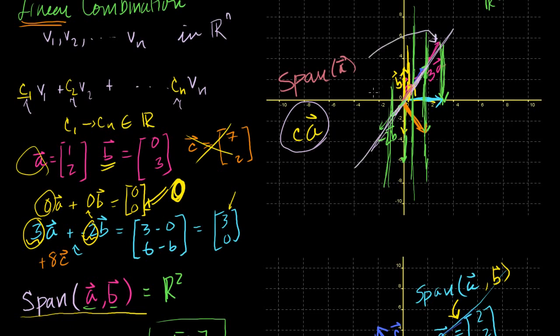You have to have two vectors, and they can't be collinear, in order to span all of R2. And we saw that if you pick this A and this B, you can represent all of R2 with just those two vectors.